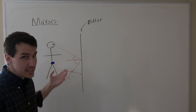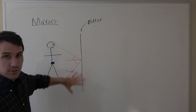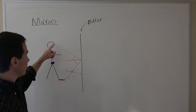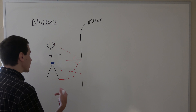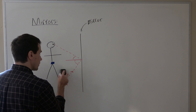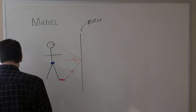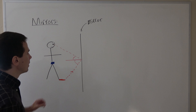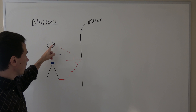Light from the red shoes bounces off every part of the mirror, but you're only going to see the light that hits your eyes, so we're going to ignore light from the red shoes that hits the mirror at other locations.